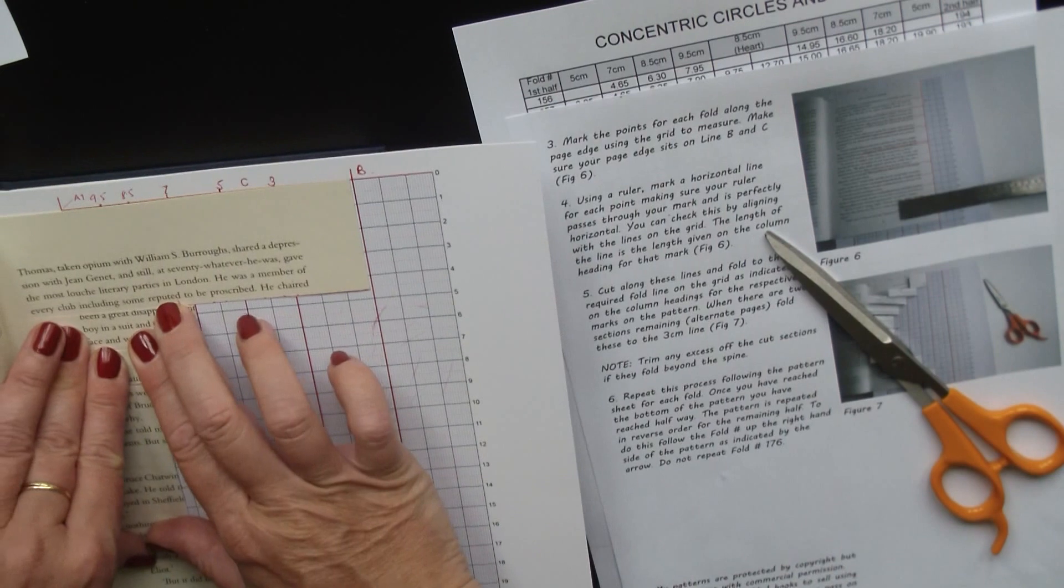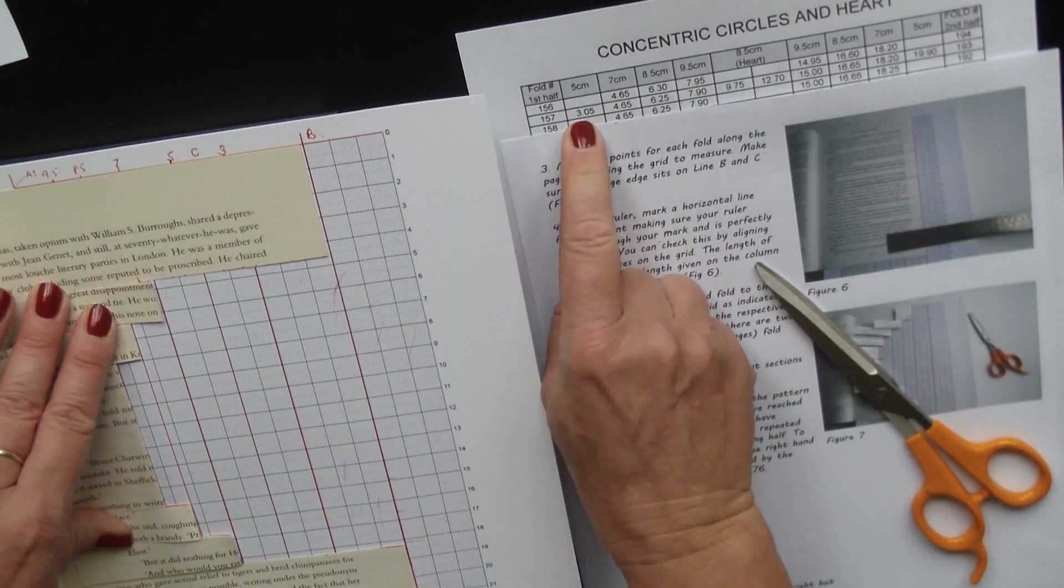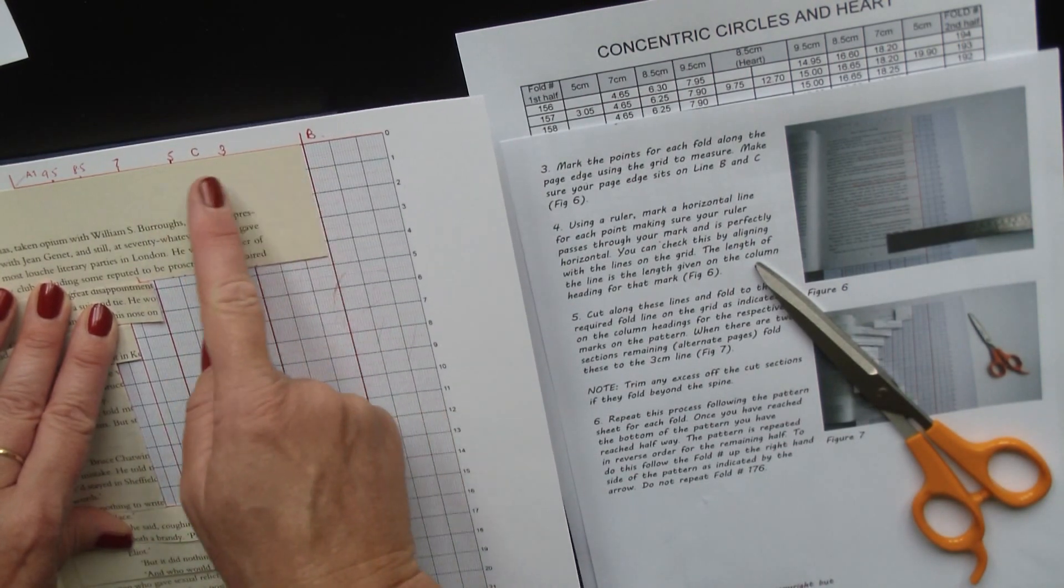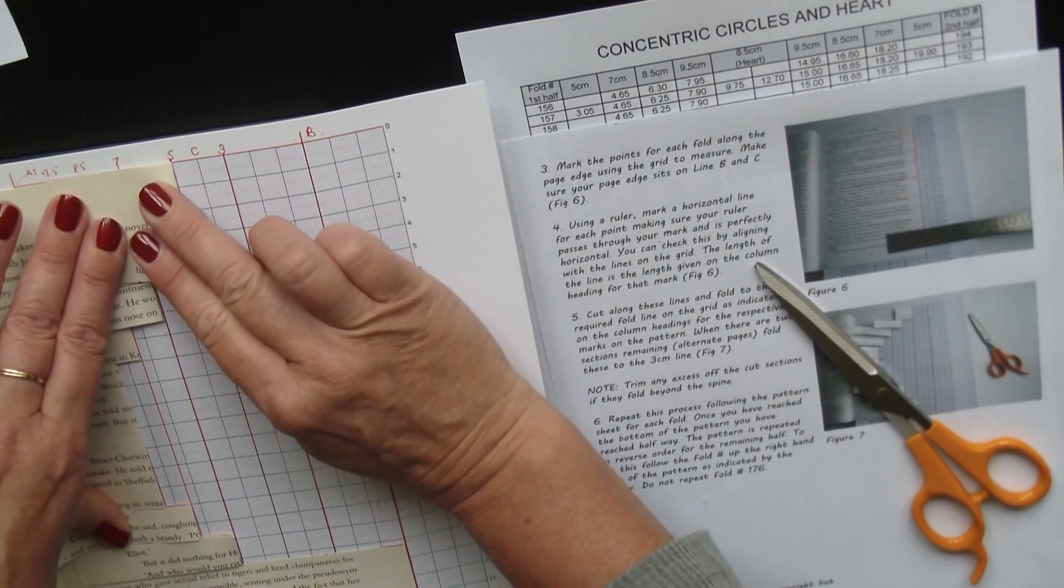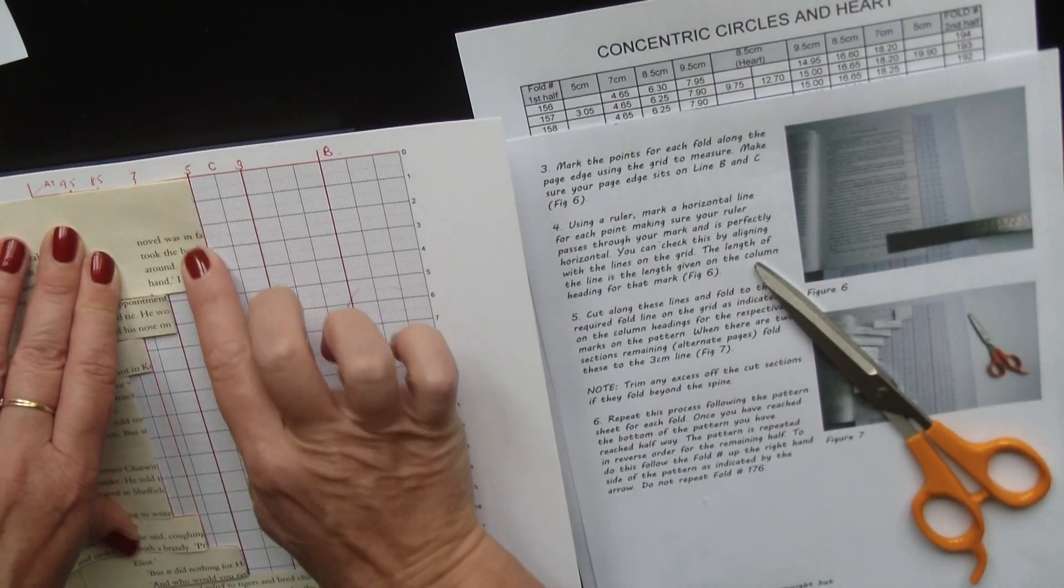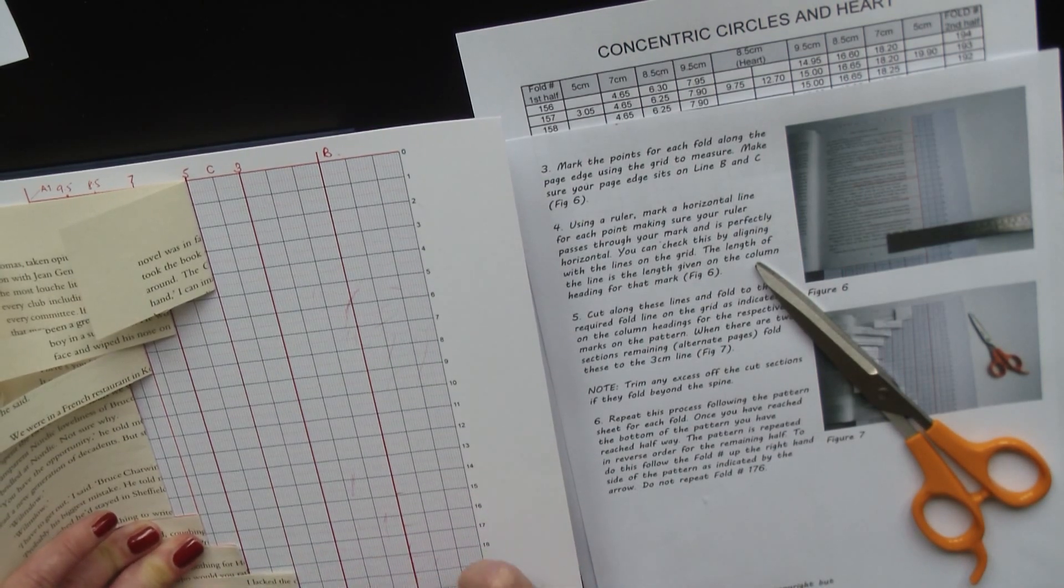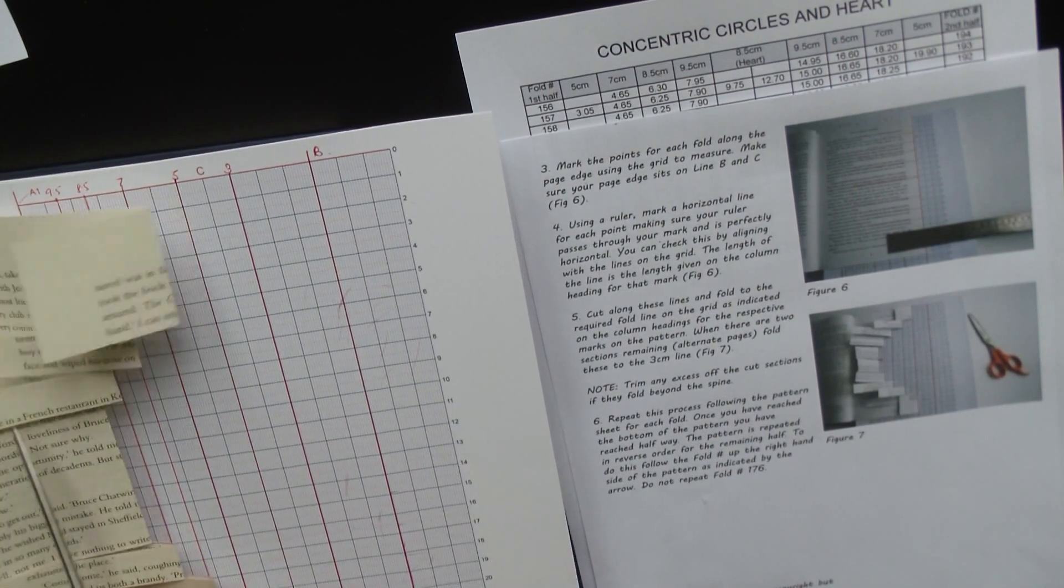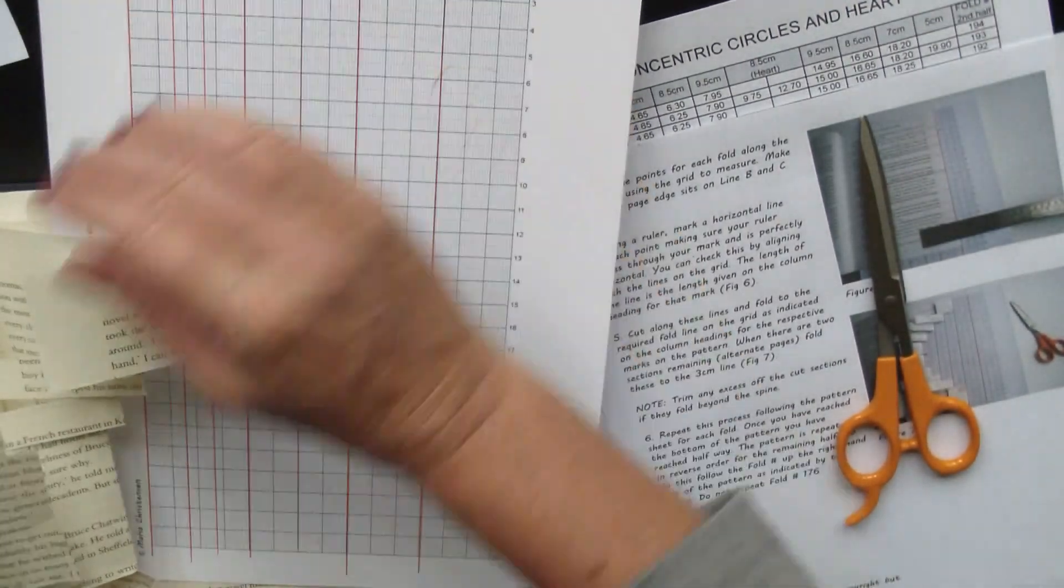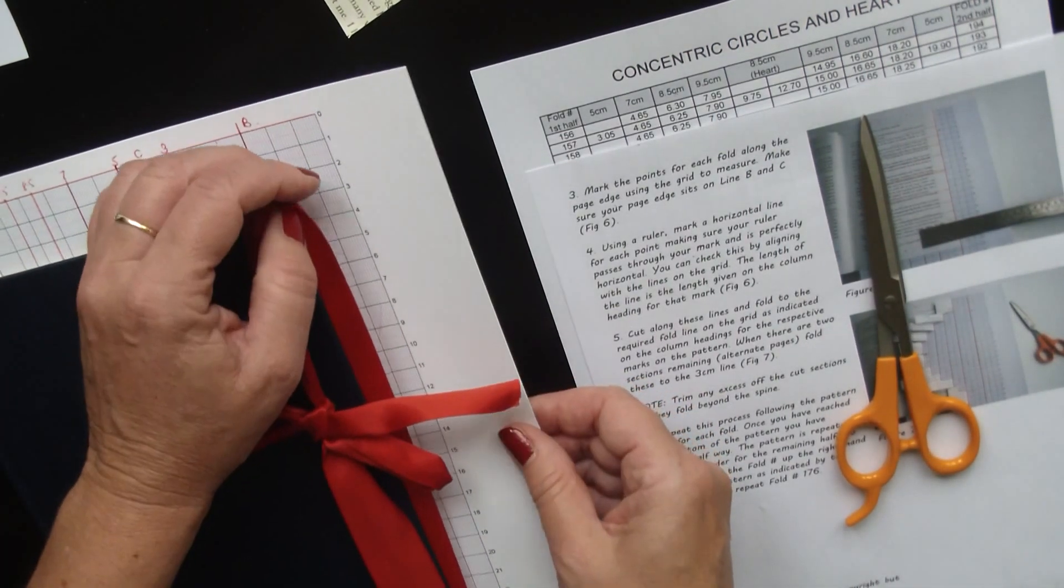Now the last two folds will either be at five or three. If you go down to 157, you've got a fold at 3.05, but as there's not one there, this one just goes straight back to five. As you're folding, just make sure that this page edge isn't over the edge because you'll end up with pages sticking up. If any of the folds are going back beyond the spine, just cut that excess off there. And what I normally do is just lay those flat with the grid, close the book, and then you can pull that out.